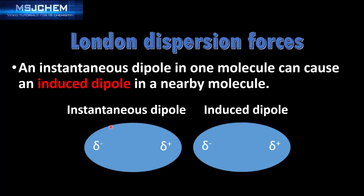On the left we have a molecule with an instantaneous dipole. If this comes close to another molecule, it can induce a dipole, which is called an induced dipole. Therefore, London dispersion forces are made up of molecules with instantaneous dipoles and induced dipoles.